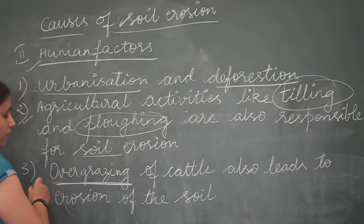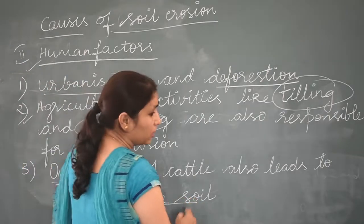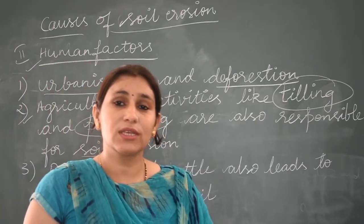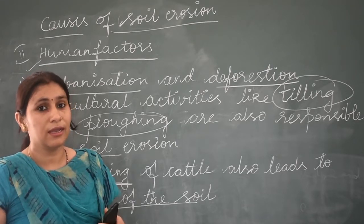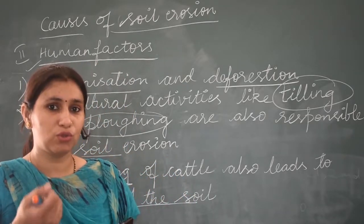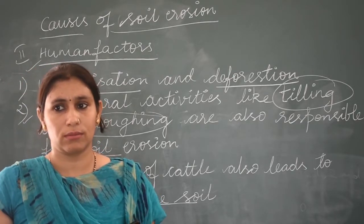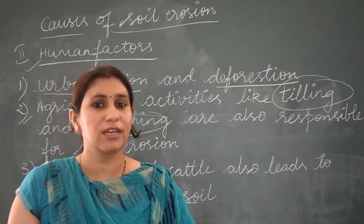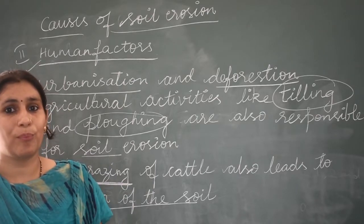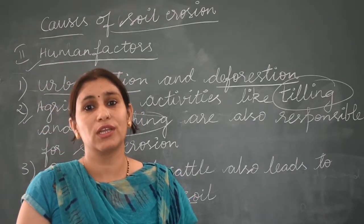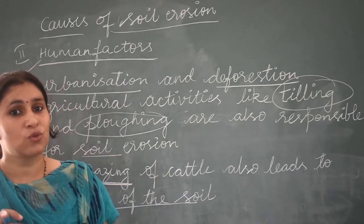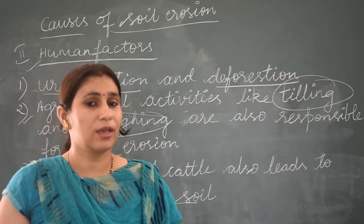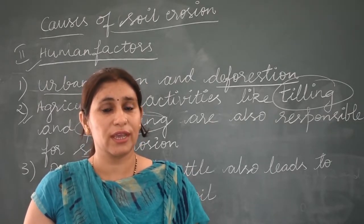So these are the human factors which I have told you today. Overgrazing of cattle also leads to erosion of the soil. Also, we did an activity to remove some plants and seeds, which shows that roots of plants hold the soil together and prevent soil erosion. That's all for today, students. Thank you.